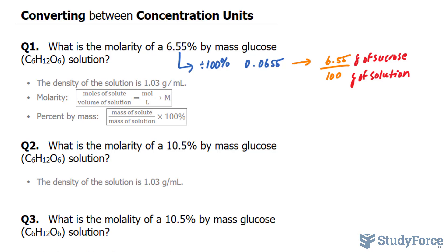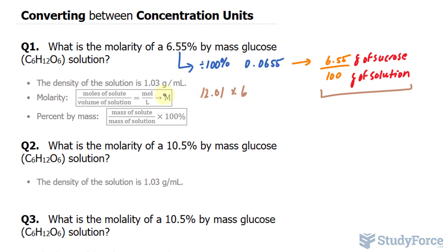Now there's a reason why this ratio is important, and we'll discuss its importance in a moment. First, I want to calculate the molar mass of glucose. Glucose has a molecular formula of C6H12O6, so we can find the individual molar masses of each of these atoms. Carbon is 12.01, multiplied by 6. Hydrogen is 1.01, multiplied by 12. And oxygen is 16, multiplied by 6.